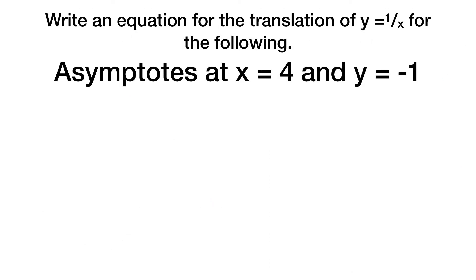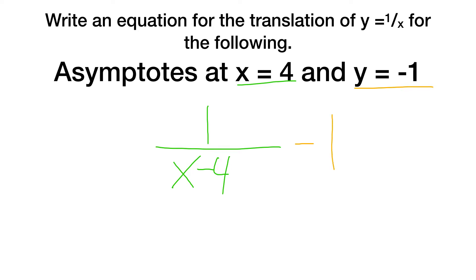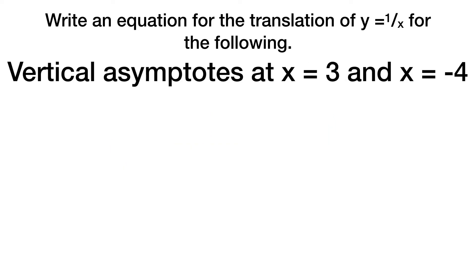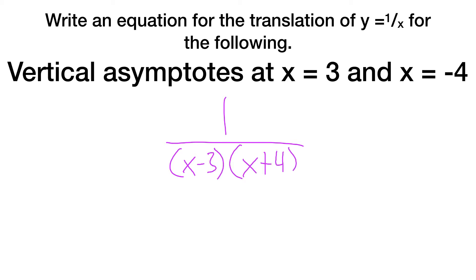Now we'll write an equation for translations. We have asymptotes at x equals 4 and y equals negative 1. Since x equals 4 is the vertical asymptote, I write 1 over x minus 4 so the asymptote lands at 4. Then minus 1 on the outside for the horizontal asymptote.